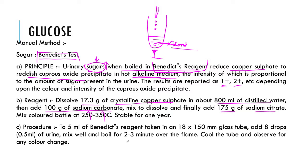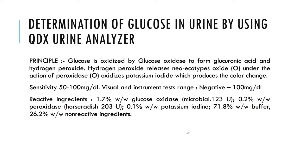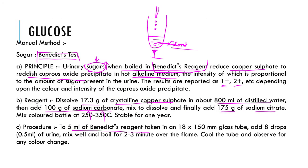Now, what is the procedure? 5 ml of Benedict reagent will be taken in a glass tube and 8 to 10 drops of urine will be added. Mix it well, boil for 2 to 3 minutes, cool the tube, and observe the color change.